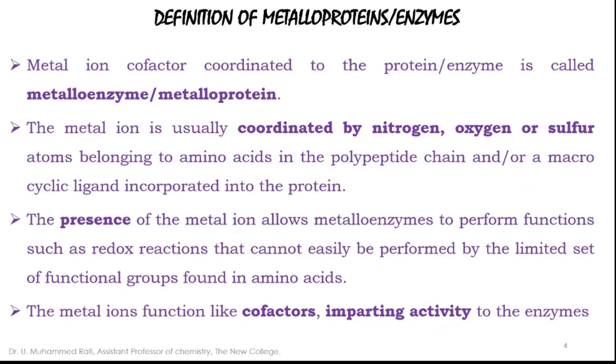These metal ions which are going to be present in the protein or enzyme are coordinated by nitrogen, oxygen, or sulfur atoms belonging to amino acids in the polypeptide chain and/or a macrocyclic ligand incorporated into the protein, as we have seen in hemoglobin or myoglobin. We have a heme inside it. That can be taken as an example of a macrocyclic ligand, or in vitamin B12 also we can see the chlorin macrocyclic ligand is present.